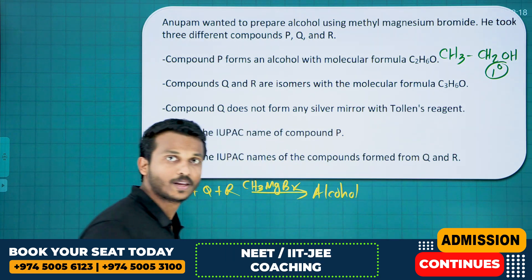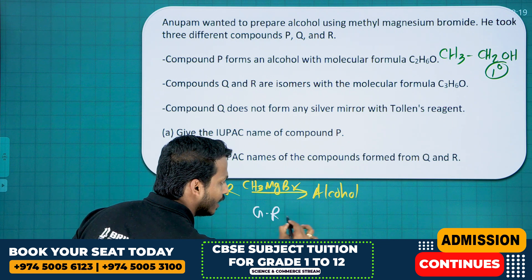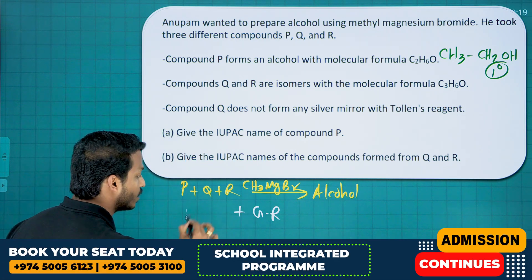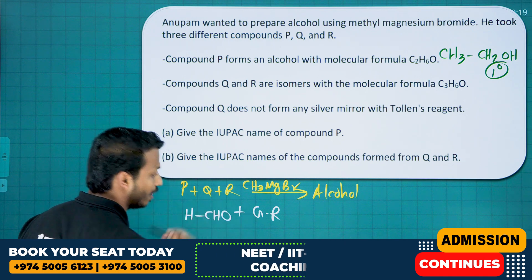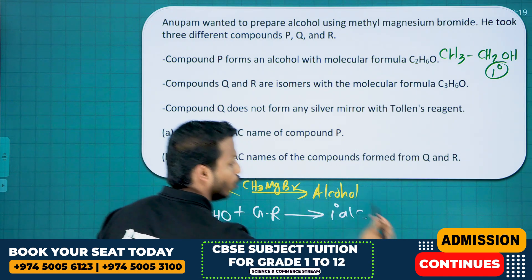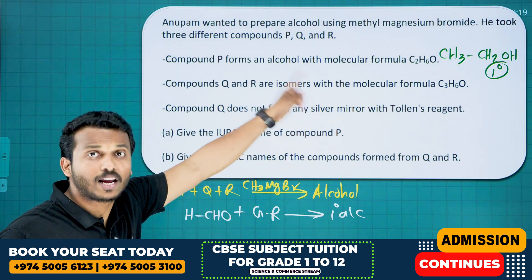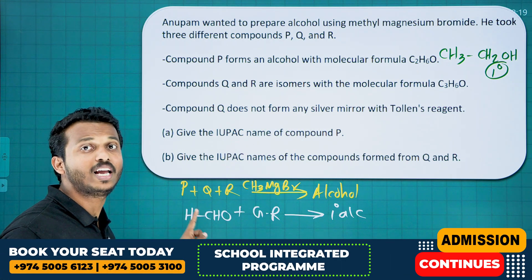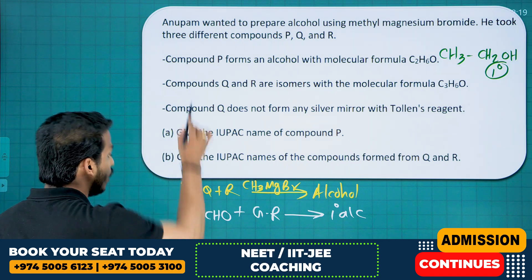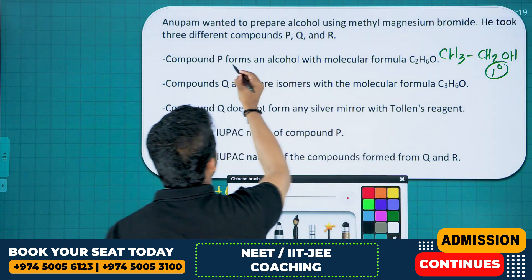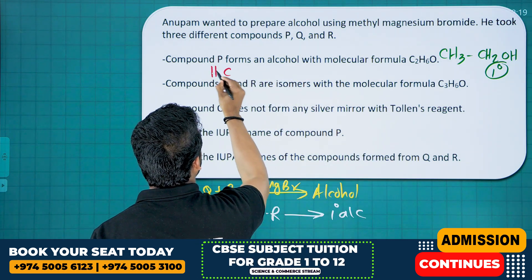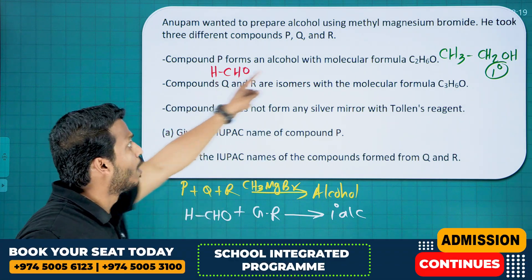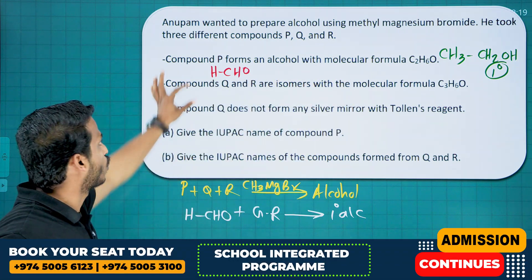We studied a special property: if any Grignard reagent is treated with methanal (HCHO), you always get a primary alcohol. Since ethanol is primary, P must be the aldehyde methanal — HCHO. Any Grignard reagent treated with methanal gives a primary alcohol, so compound P is methanal.